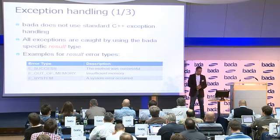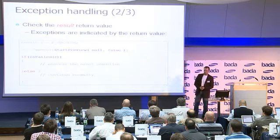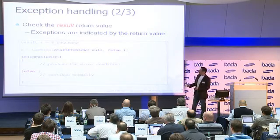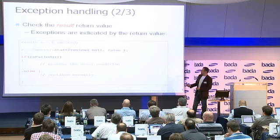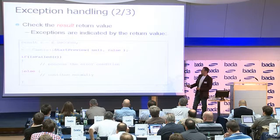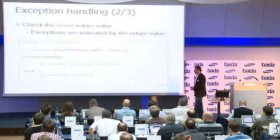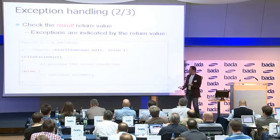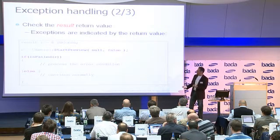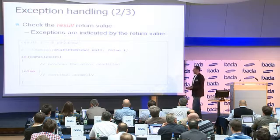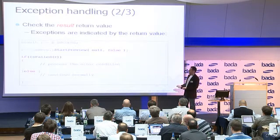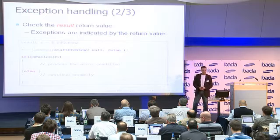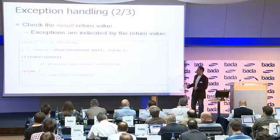As a code example, I took the method `start_preview`, which is a method of the camera class. This method returns a value of type `result`, which we store in the variable R. We then query the value of R, and if it indicates failure we can process the error condition; otherwise we continue normally.